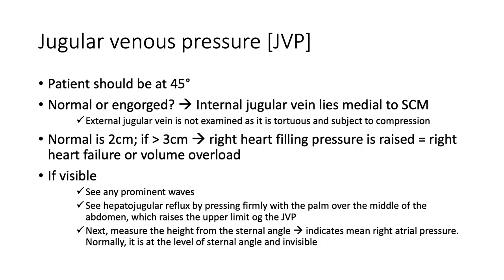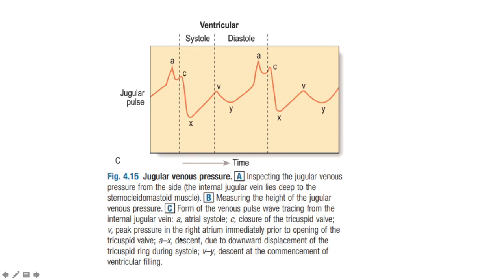Jugular venous pressure: the patient should be orientated at 45 degrees. The internal jugular lies medial to the sternocleidomastoid. Never use the external jugular vein as it is tortuous and subject to compression. Anything above three centimeters means right heart filling pressure is raised, speaking to right ventricular overload or failure. If visible, ascertain your A, C, V waves, check hepatojugular reflux, and measure height from the sternal angle. A wave speaks to atrial contraction, C speaks to closure of the tricuspid valve, V is peak pressure in the right atrium prior to tricuspid valve opening. X descent is due to downward displacement of the tricuspid ring, and Y descent at the commencement of ventricular filling.